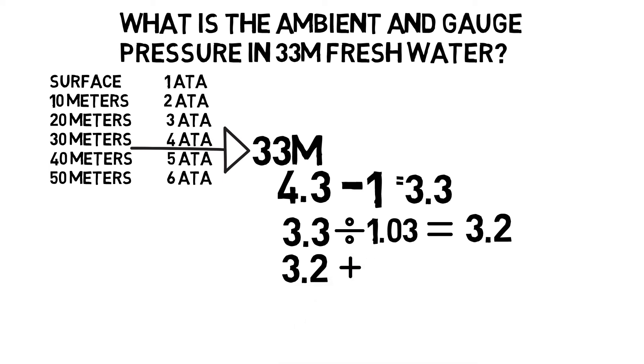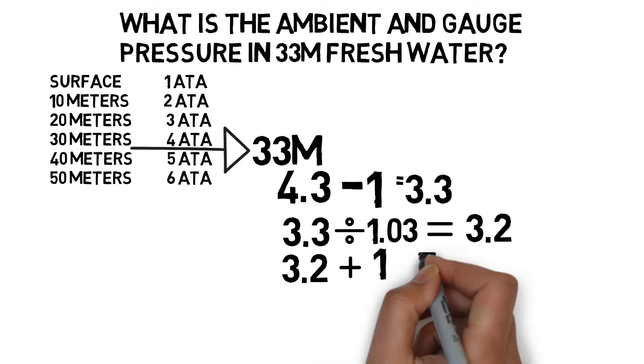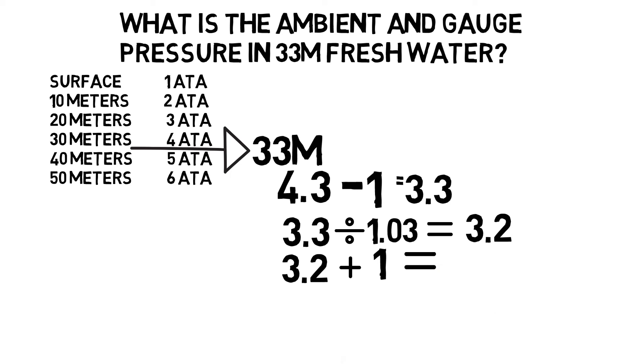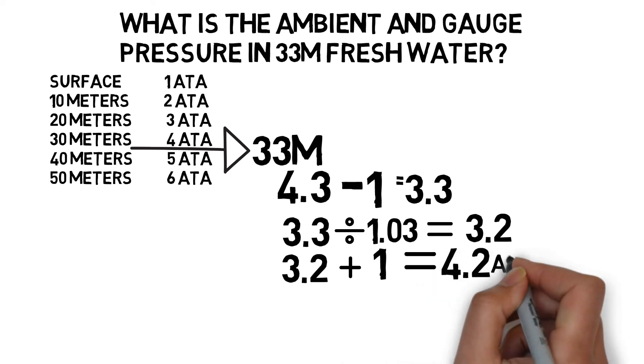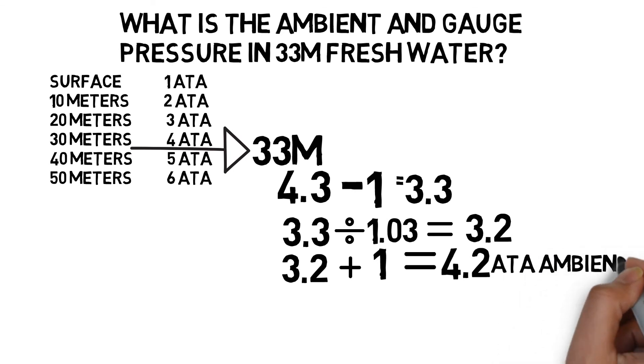And then we need to add the atmospheric pressure back in. And we have our ambient pressure in fresh water. So that subtract one and then add one back in is all to do with the fact that the atmosphere's pressure doesn't change, whether we're at the surface in fresh water or in salt water. So we've now got 4.2 atmospheres is the ambient pressure at 33 meters of fresh water.